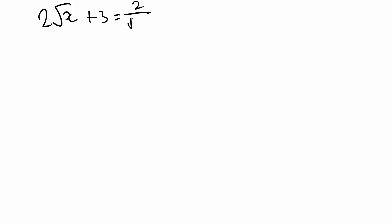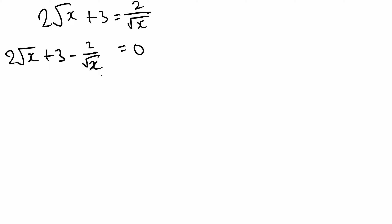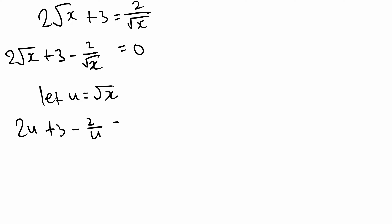Let's look at one final question that I consider quite challenging: 2 root x plus 3, all equaling 2 divided by root x. There are a couple more steps involved here. We're going to first move everything over to the left side so it equals 0 — that's how we get our quadratic equation. So 2 root x stays the same, plus 3 stays the same, but we subtract 2 divided by root x from both sides.